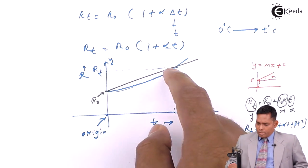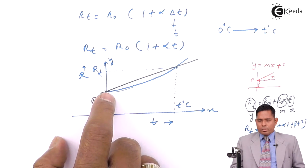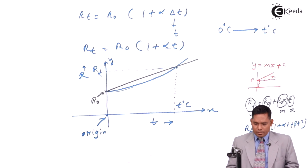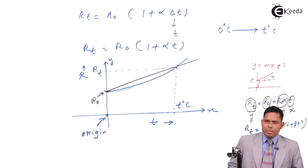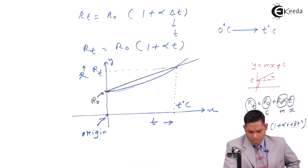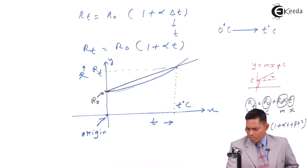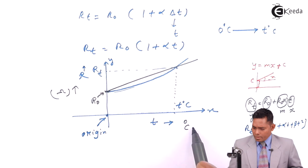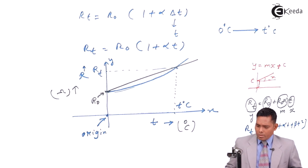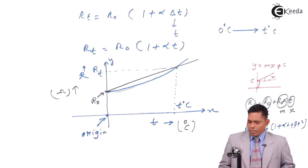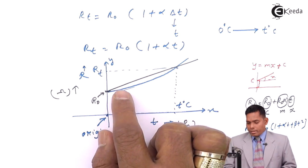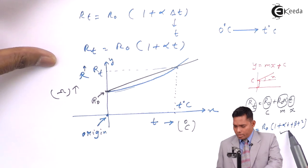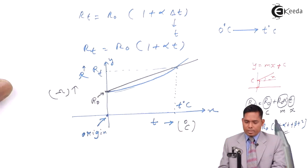R0 is the resistance at T equals zero, and Rt is the resistance at temperature T. The graph has resistance (in ohms) on the y-axis and temperature (in degrees centigrade) on the x-axis. We can also discuss why the graph has the shape it does.